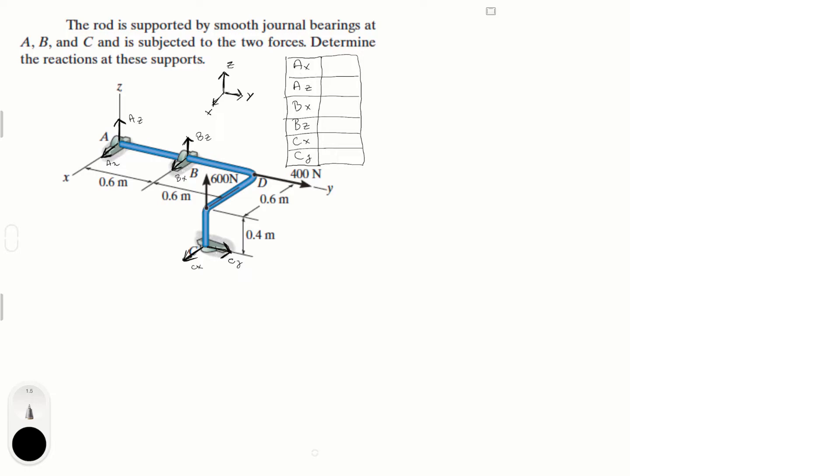First, sum of the forces in the y direction equals zero. In the y direction it's pretty easy because you have the 400 newton force going to the positive y direction and CY also going to the positive y. So 400 plus CY equals zero. This means that CY is equal to negative 400 in the j direction.